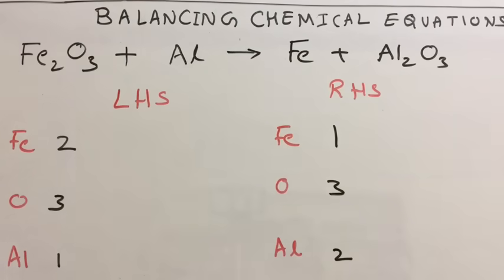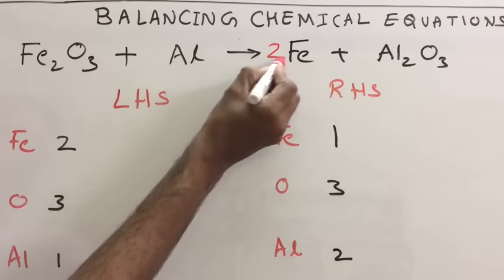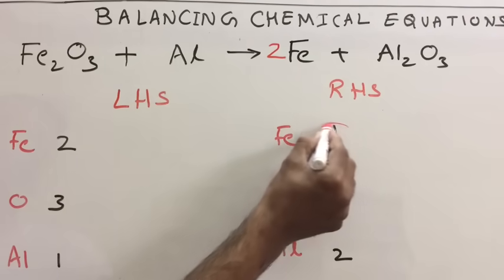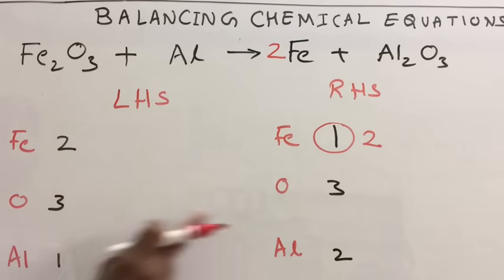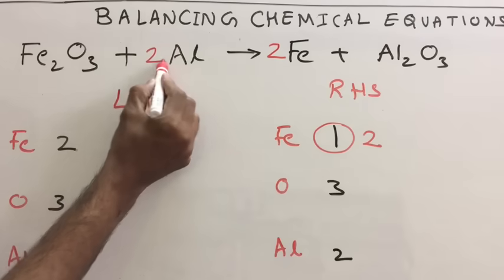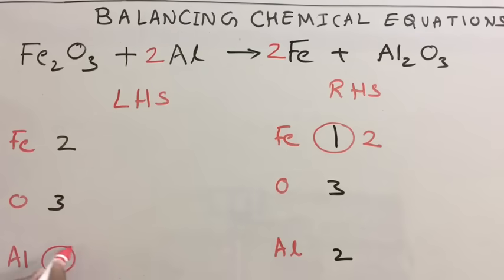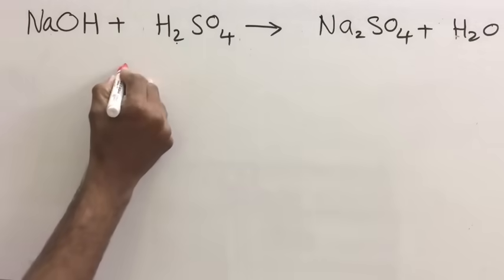Let us balance. Only one iron on RHS, so multiply with two — iron becomes two. Oxygen is already balanced, three and three. Aluminium on LHS you have one, on RHS you have two, so multiply LHS with two — it becomes two aluminium. This is your balanced equation.